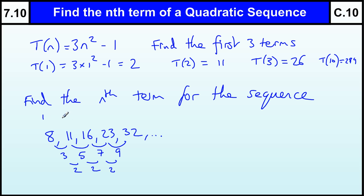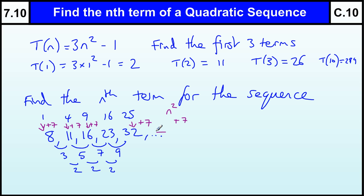If we just write down the square numbers — the basic quadratic sequence — 1, 4, 9, 16, 25, we should spot a connection between those two sequences. What do I have to do to 1 to get to 8? I've got to add 7, and it's add 7 each time. So I'll start with the n squared sequence and then add 7 to it, which gives n squared plus 7. That's essentially how you do a nice simple one — a square number plus or minus something to get another sequence.